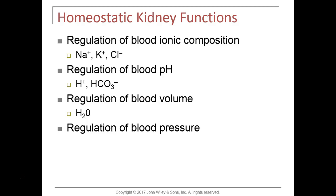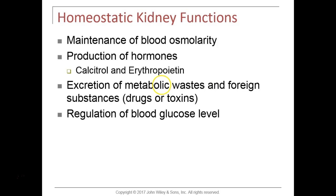Then our blood pressure is low — we talked about hypovolemic shock in chapter 21. When someone has a reduced blood volume, their blood pressure drops and they start going through hypovolemic shock. Nonetheless, the kidneys also produce some hormones for us.